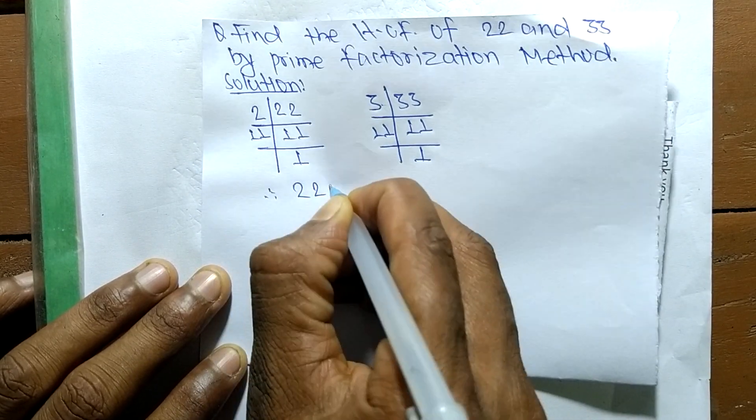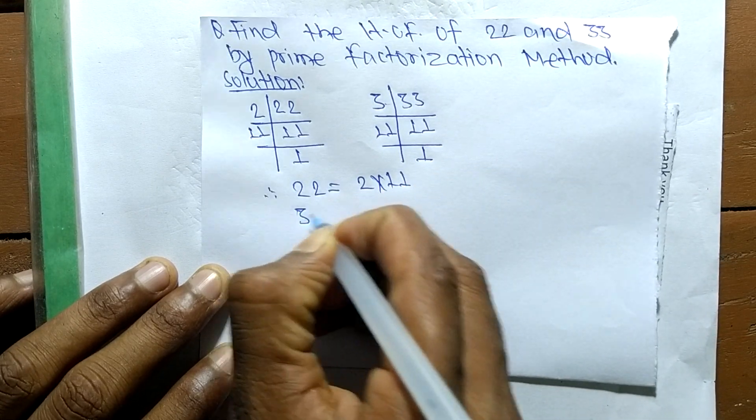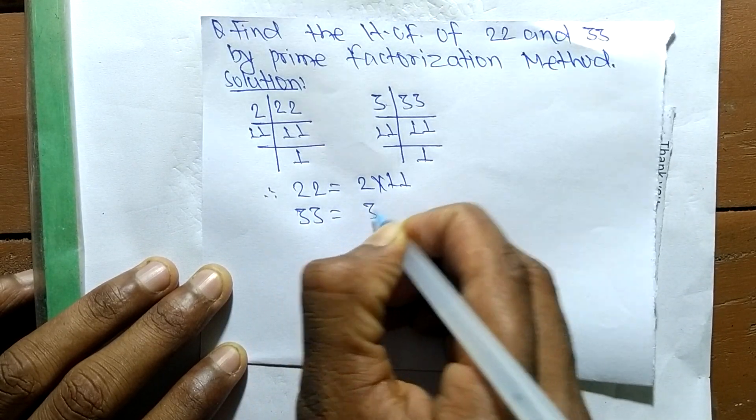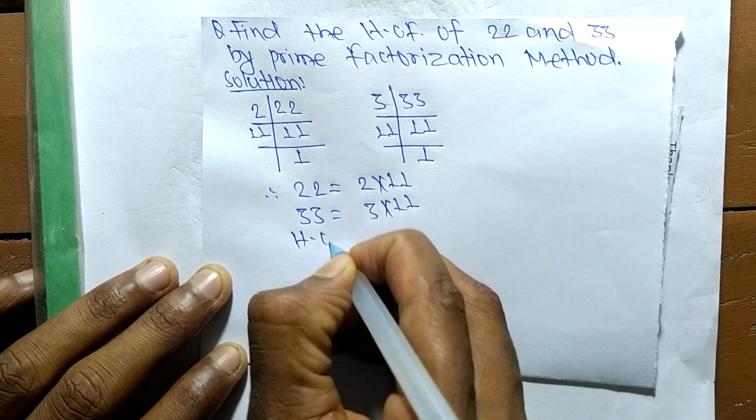So now from these prime factors we can write 22 is equal to 2 times 11 and 33 is equal to 3 times 11.